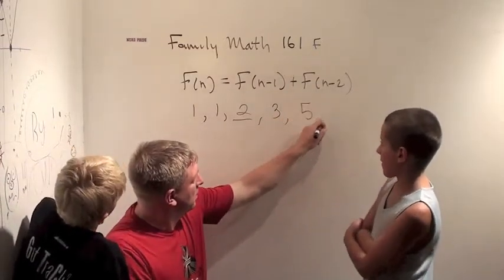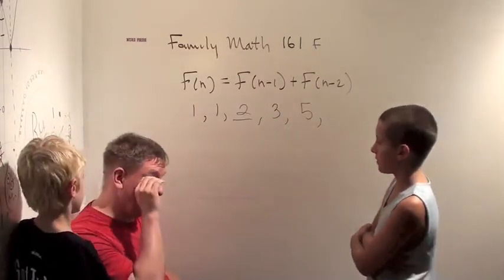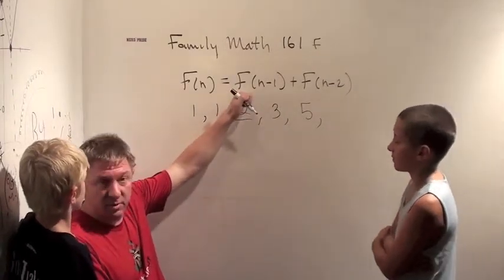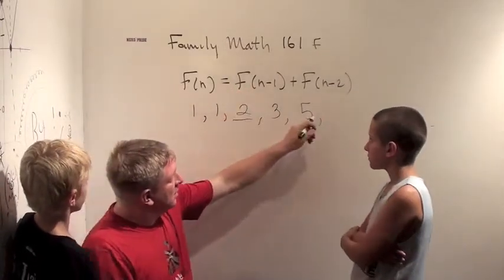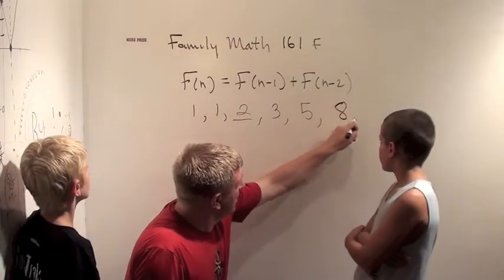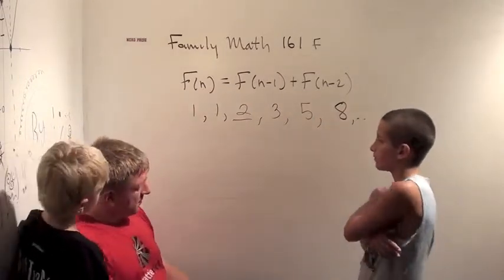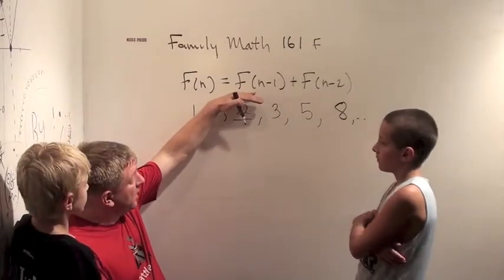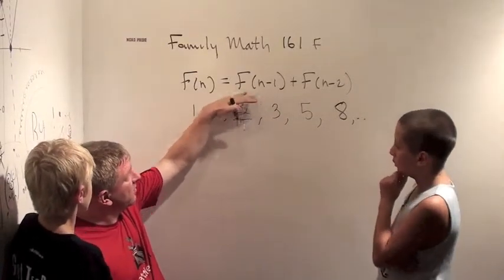And these get big fast just like our other set. These get big fast. In fact our other one got big faster because we were actually multiplying by two. Eight. And see the interesting thing about this is a very similar type of formula. Right? And in terms of this formula.